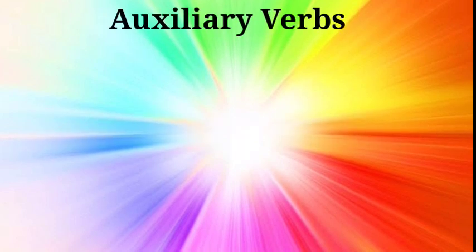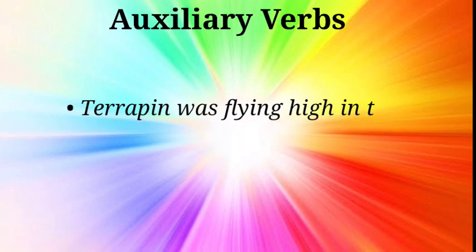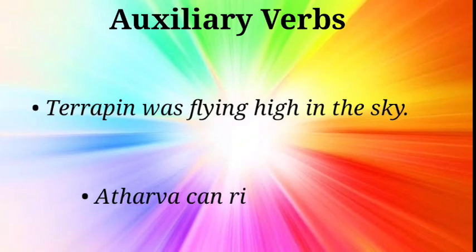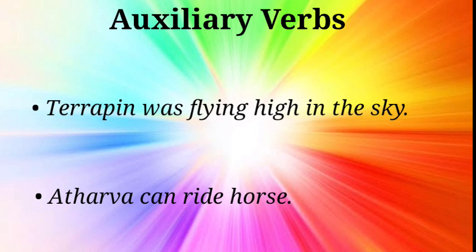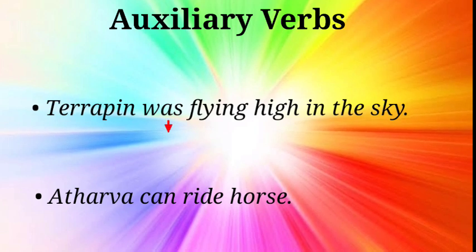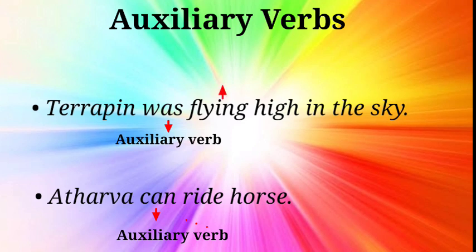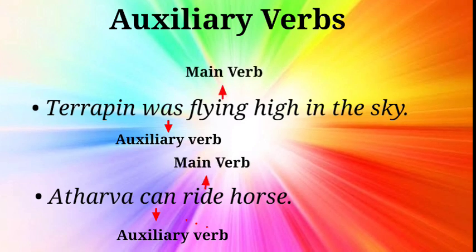Look at these two sentences. Terrapin was flying high in the sky. Atharv can ride horse. In both the sentences, the words was and can are auxiliary verbs. Whereas, the words flying and ride are main verbs.